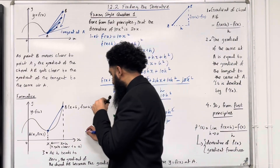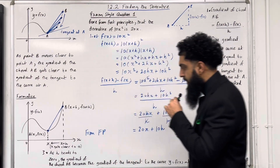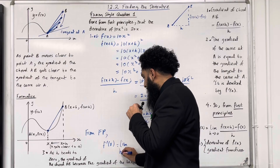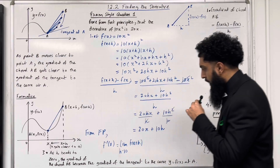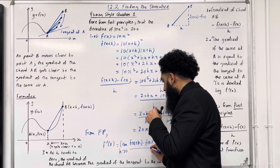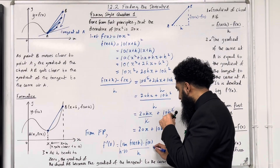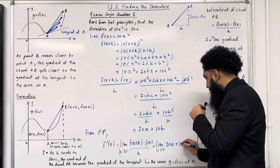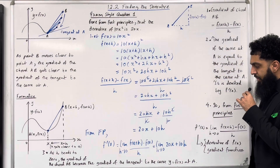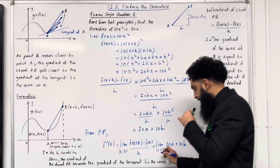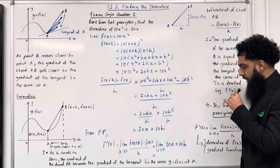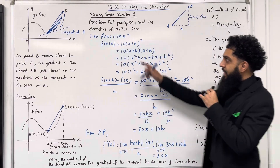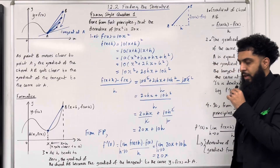From first principles, f dash of x is given by the limit as h tends to 0 of f of x plus h minus f of x, all over h. That would be the limit as h tends to 0 of 20x plus 10h. When we take the limit as h tends to 0, we replace the h with 0. So 10 times 0 is 0, leaving us with 20x. We have shown from first principles that if f of x equals 10x squared, then f dash of x is 20x. This completes exam style question 1.